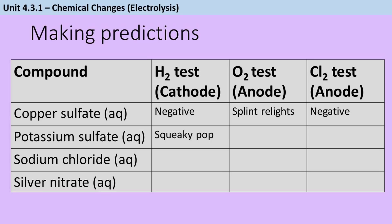If we take sodium chloride solution, sodium is more reactive than hydrogen, so sodium stays in the solution and instead hydrogen gas is produced, so we'll get a positive squeaky pop test. And then this time we do have a halide, we do have chloride ions, so they will be discharged and damp litmus paper would be bleached by this.